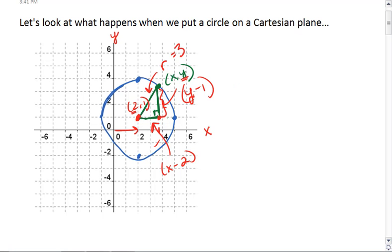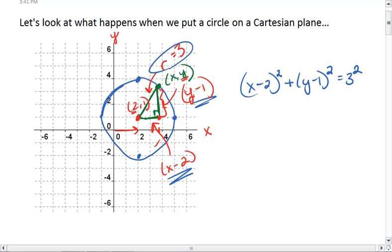I know by Pythagorean theorem that, let's start with x, x minus 2 squared plus y minus 1 squared equals 3 squared, the hypotenuse.